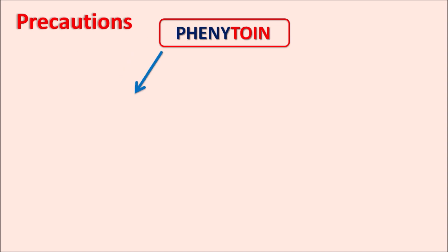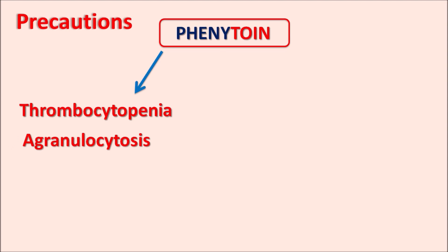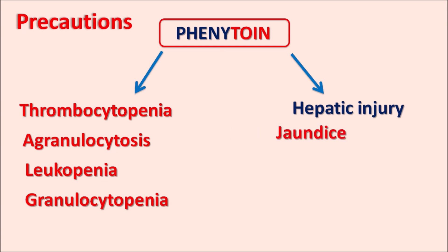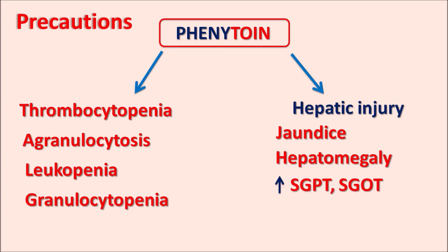Phenytoin can produce blood disorders like thrombocytopenia (decreased thrombocyte count), agranulocytosis (decreased white blood cells), leukopenia (decreased leukocytes), and granulocytopenia. Any other drug that produces blood dyscrasias should be carefully co-administered with phenytoin. This drug can also produce hepatic injury and hepatic failure, inducing jaundice, hepatomegaly (enlargement of the liver), and increased transaminase enzymes SGPT and SGOT, and even eosinophilia as part of hypersensitive reactions. With chronic use, there is a risk of hepatic failure.